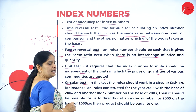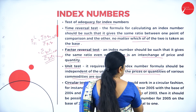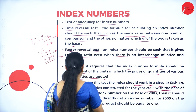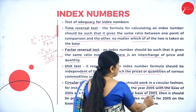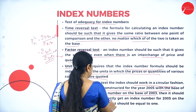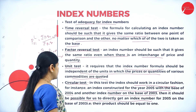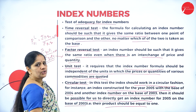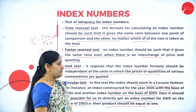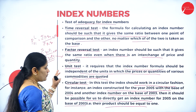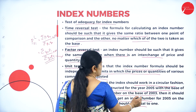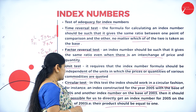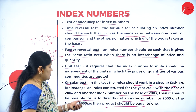The next test is the circular test. In this test, the index number should work in a circular fashion. For instance, an index constructed for the year 2005 with the base of 2004, and another on the base of 2003, should allow us to derive an index for 2005 on the base of 2003. Their product should equal 1. So whenever we construct index numbers for 2005 with base 2004, and for 2003 with base 2005, and for 2005 with base 2003, all their products should equal 1.